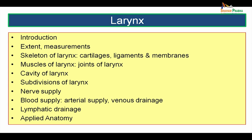We will be dealing with the topic of larynx under the following headings: introduction, extent and measurements, the skeleton of the larynx where we will deal with the cartilages, the ligaments and membranes. Then we will move on to the muscles of the larynx, joints of the larynx, cavity of larynx, the subdivisions of larynx. Then we go on to the nerve supply, blood supply which will include the arterial supply and the venous drainage, lymphatic drainage, and finally the applied anatomy.